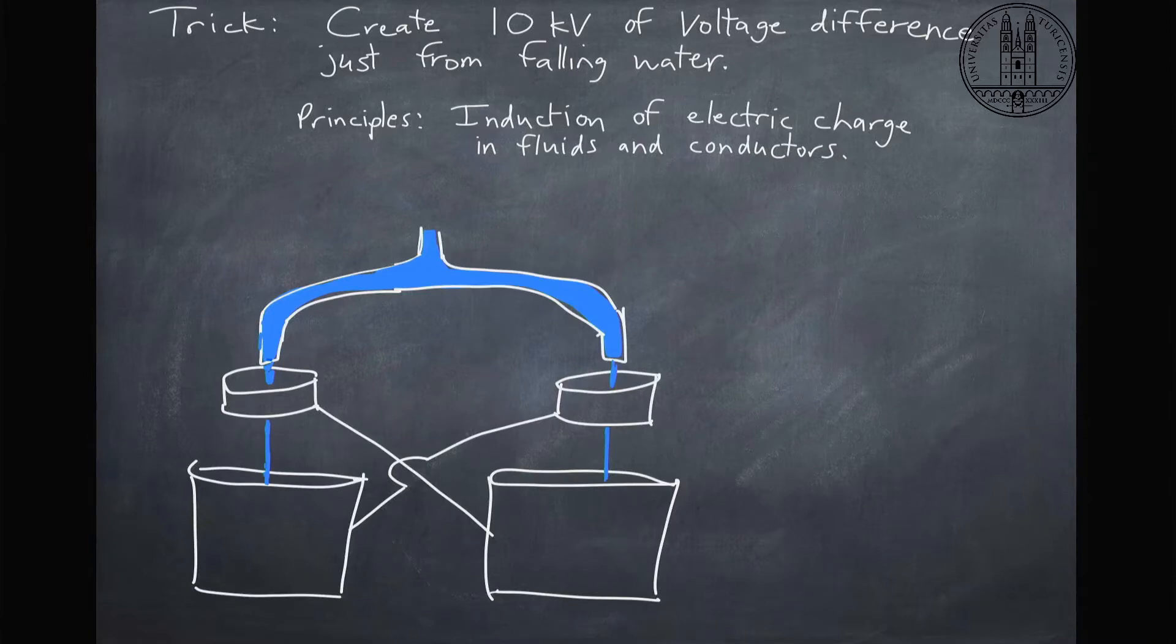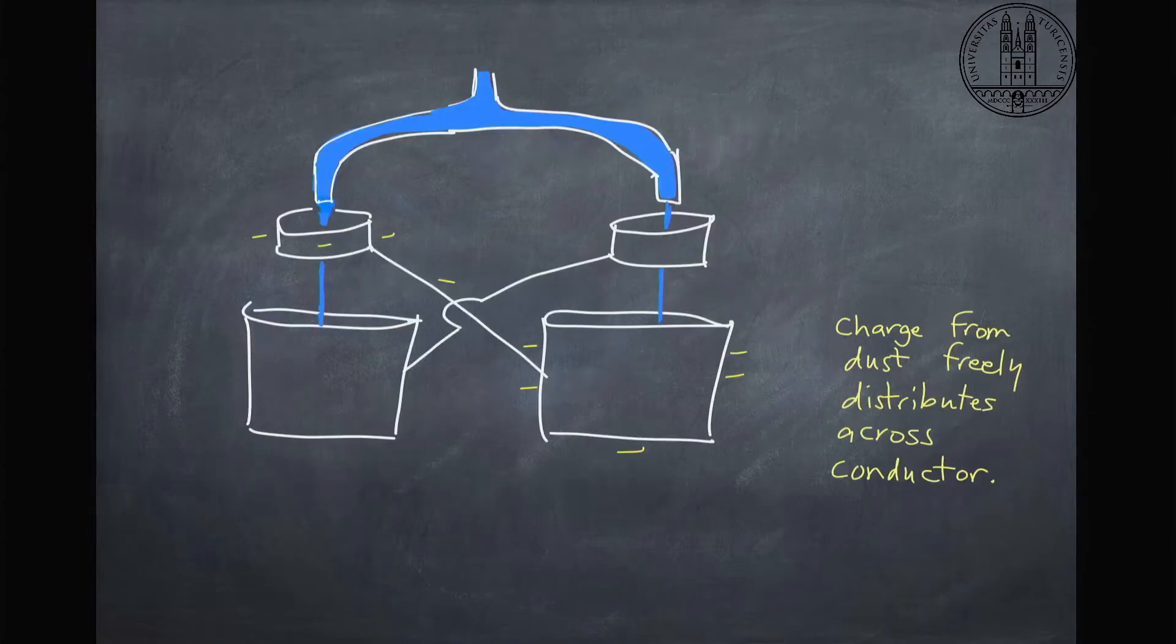So here is our setup. We have water falling through these hollow metal tubes into these pails. And randomly, this is our random event here, a piece of dust with a little bit of electric charge floats over and lands on one of our pails here, one of our conducting pails.